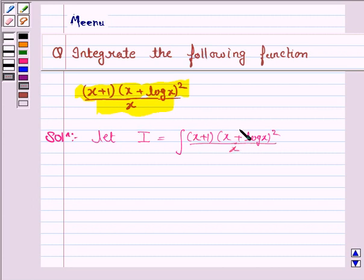Here we see that the derivative of x plus log x is 1 plus 1 upon x, which can be written as x plus 1 upon x, that is this.